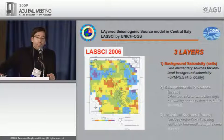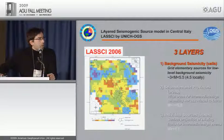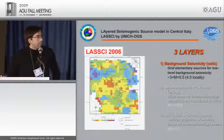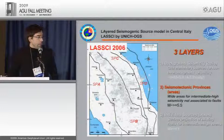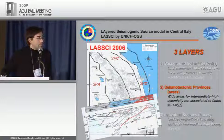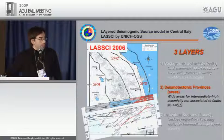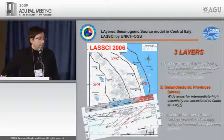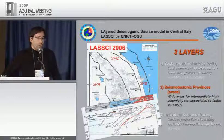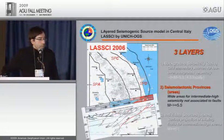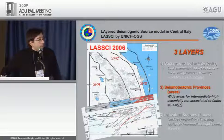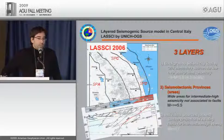The second layer is seismotectonic provinces, whose boundaries integrate seismicity with major geological structural elements. Within these provinces we associate high seismicity above magnitude 5.5. Except for SPB, in the provinces SPA, SPC, and SPD we used a corner-type approach: uniform spatial distribution, Gutenberg-Richter distribution in magnitude, and stationary processes in time.